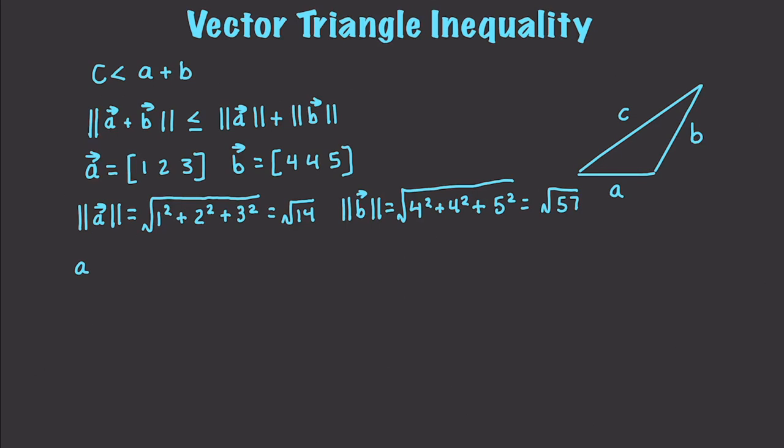Well, then, if we added together A plus B, this would give us 5, 6, and 8. And if we then took the magnitude of 5, 6, and 8, we'd have 5 squared plus 6 squared plus 8 squared square root, which is going to end up being the square root of 125.